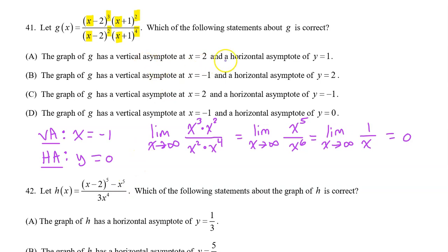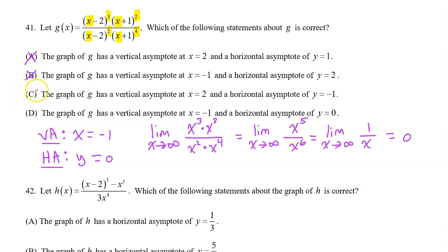Now let's look at the options. Option A: vertical asymptote at x equals negative one — nope. Option B: vertical asymptote at x equals negative one, horizontal asymptote at y equals two — nope. Option C: x equals two — nope. Option D: vertical asymptote at x equals negative one, and a horizontal asymptote at y equals zero. The answer is D.